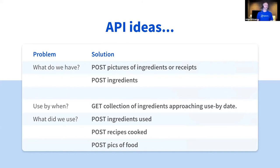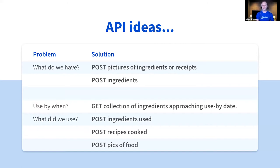This brings us to the API ideas — how I start to form an API. I've summarized the problems and the solutions are written in terms of little API requests. There are HTTP methods: POST is sending information in typically, PUT is also sending information in but to update or create a specific resource by its identifier, and GET is to get either a specific resource or a collection of items. I'm only using POST and GET here.